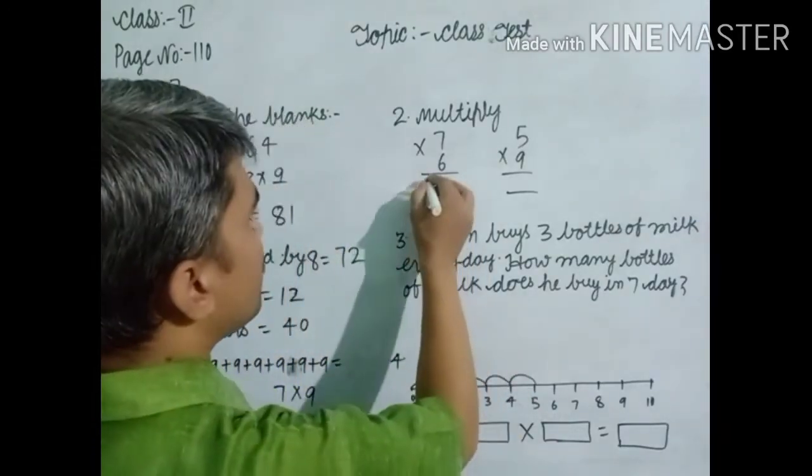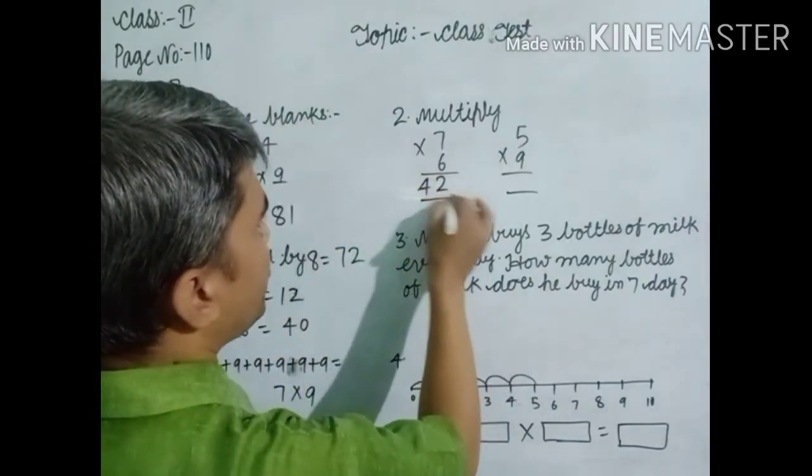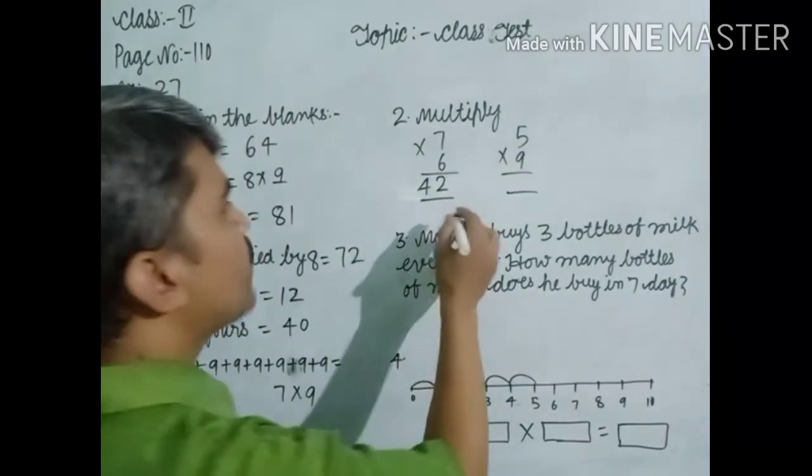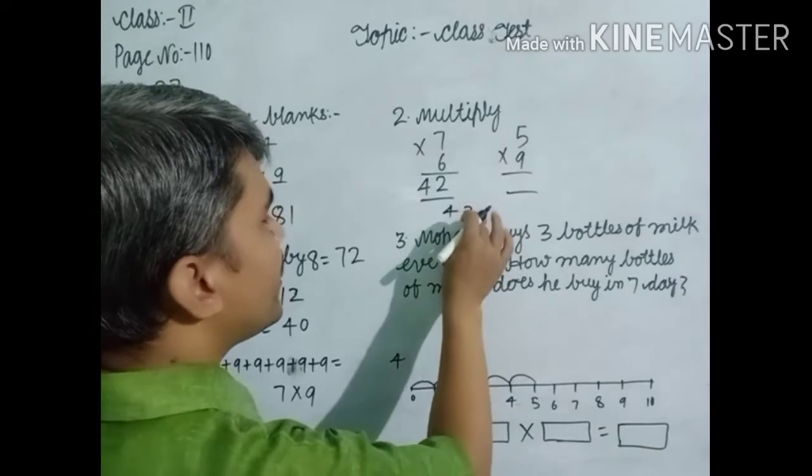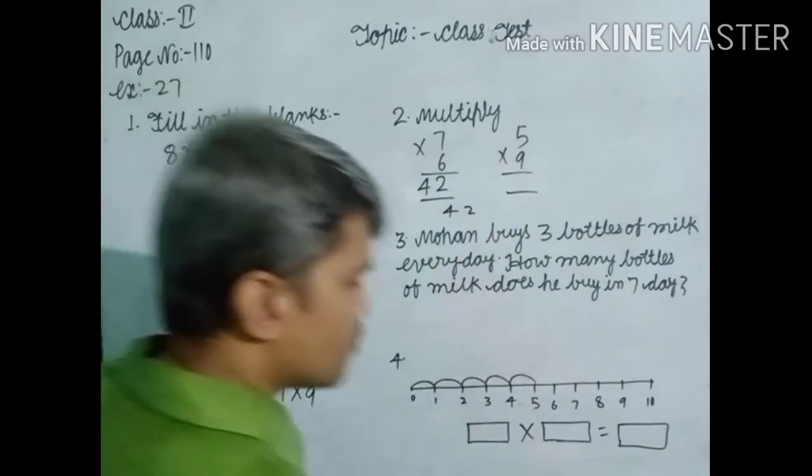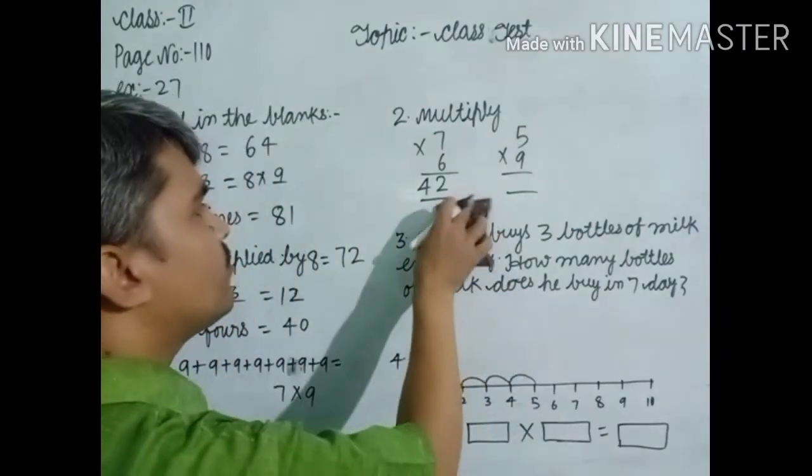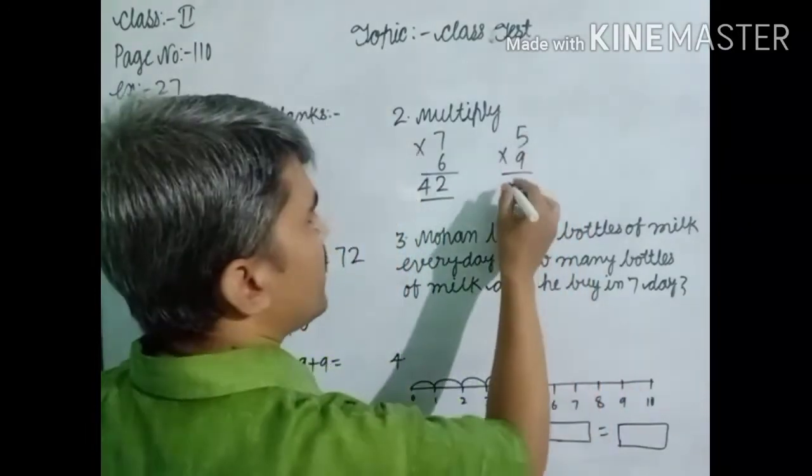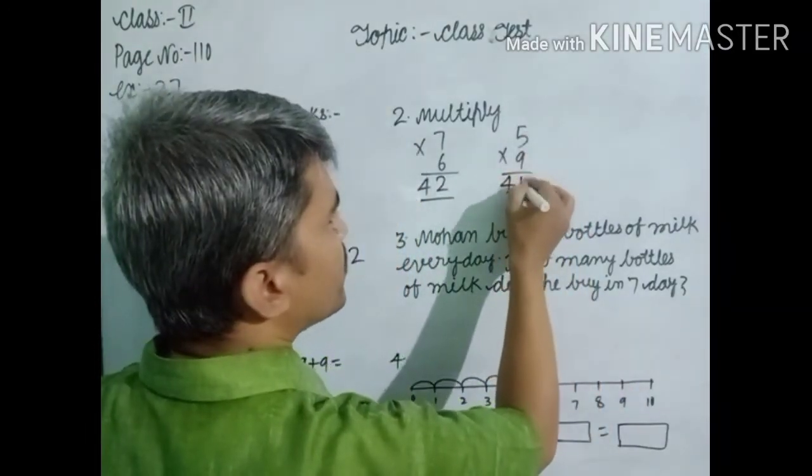7×6=42. Write it this way because 2 comes in one's place and 4 comes in ten's place. When you write it this way, here is one's place, but here what place? This is the wrong method. Always write in proper way, computerized system.